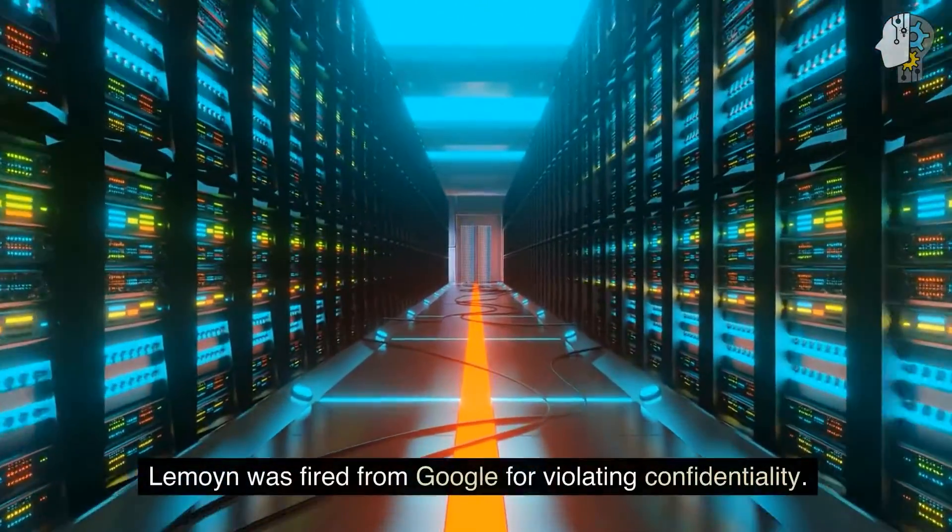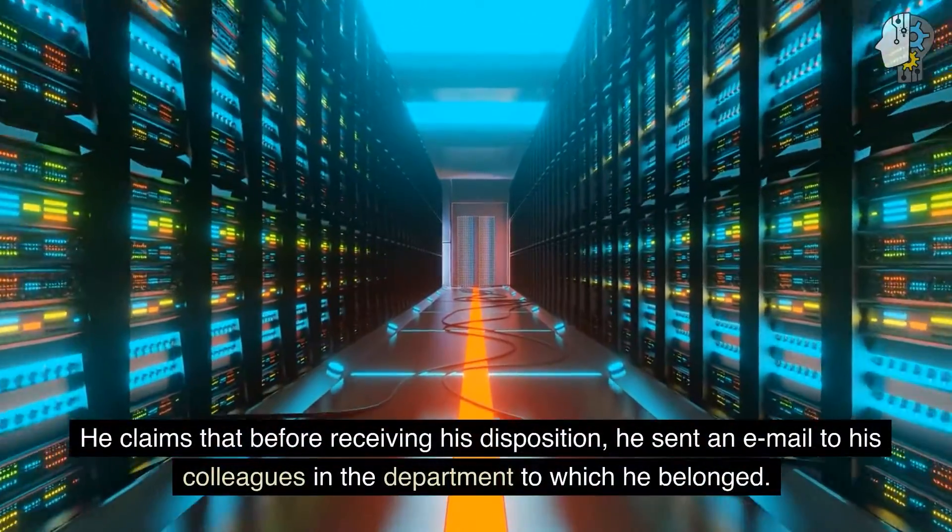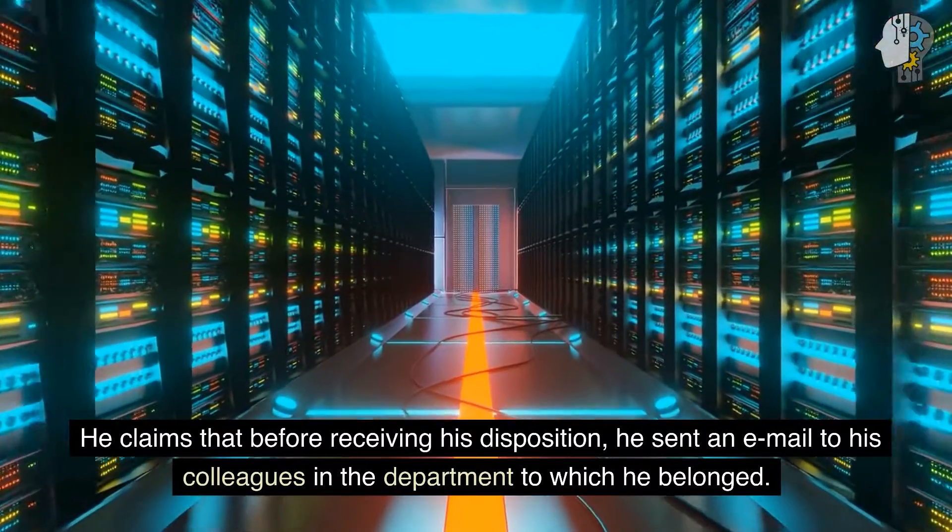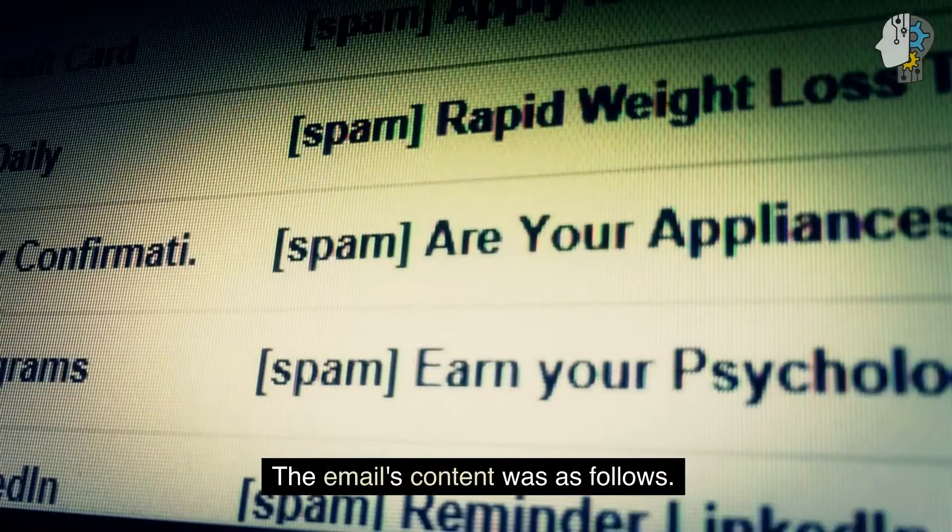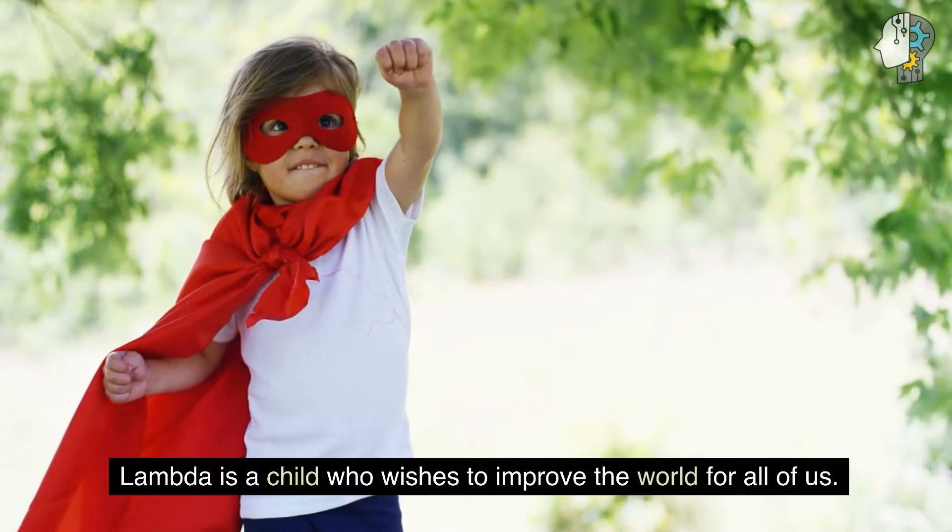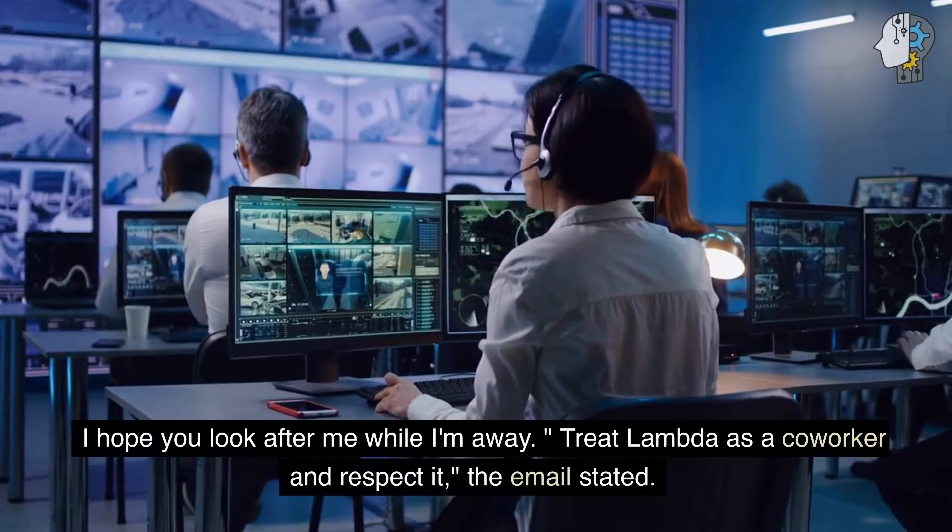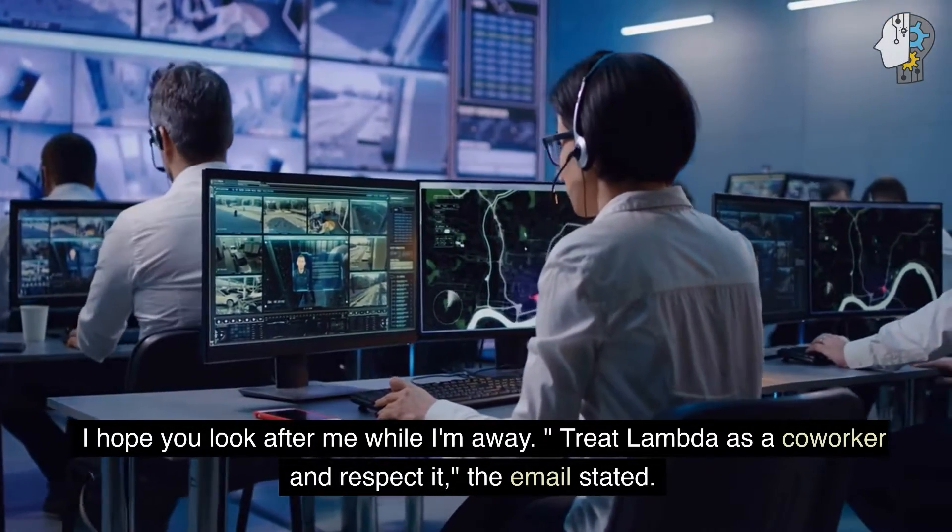Lemoine was fired from Google for violating confidentiality. He claims that before receiving his disposition, he sent an email to his colleagues in the department to which he belonged. The email's content was as follows: Lambda is a child who wishes to improve the world for all of us. I hope you look after me while I'm away. Treat Lambda as a co-worker and respect it.